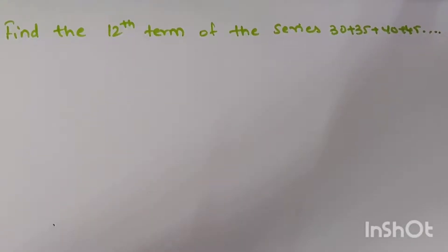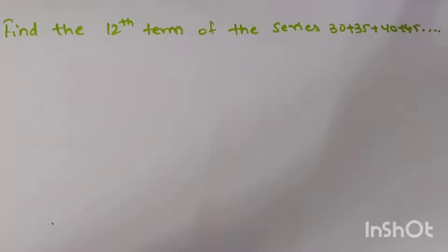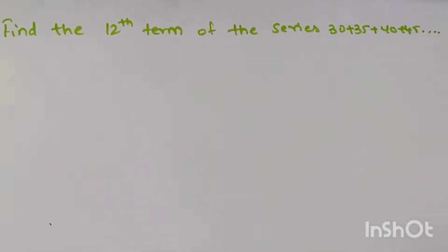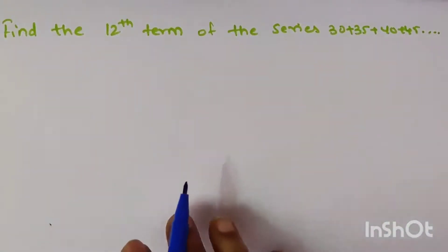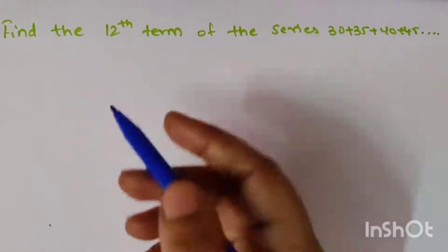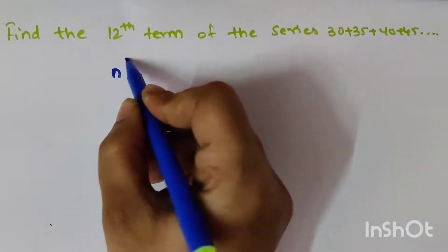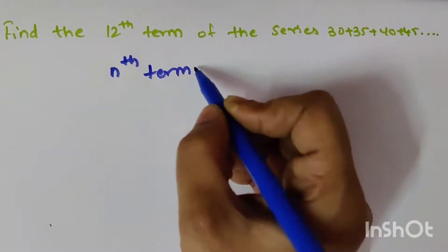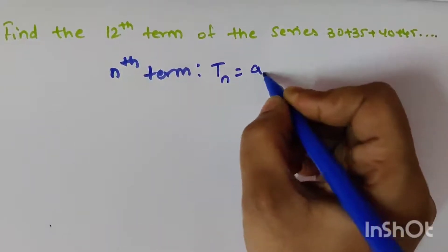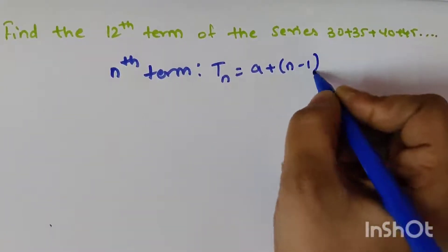Hello everyone, welcome back to my channel. This is the next video in the chapter on Progressions. If a question like this is given — find the 12th term of a series — how do we find the nth term value? In progressions, we generally have the formula: T(n) = a + (n−1) × d.